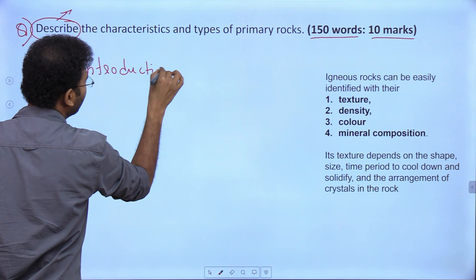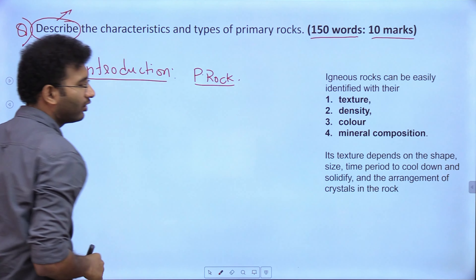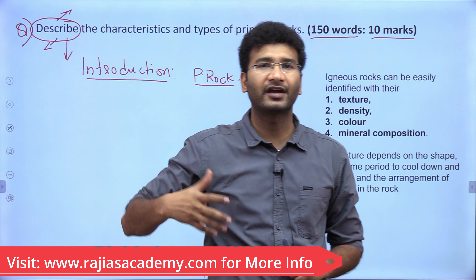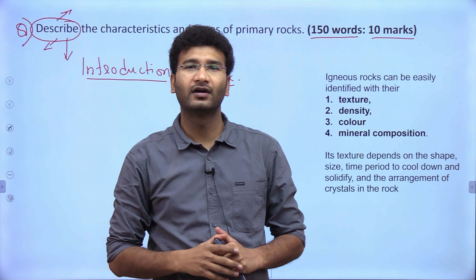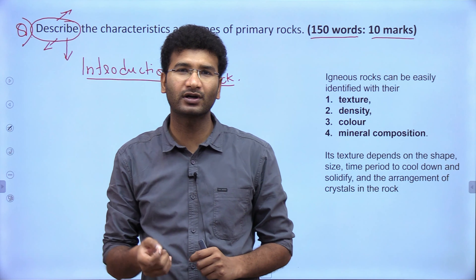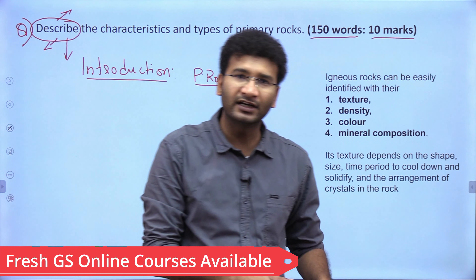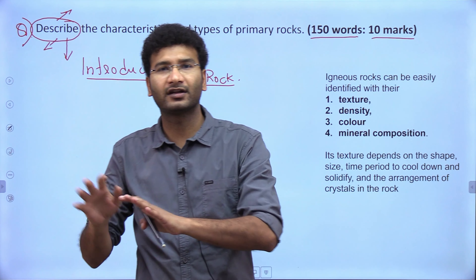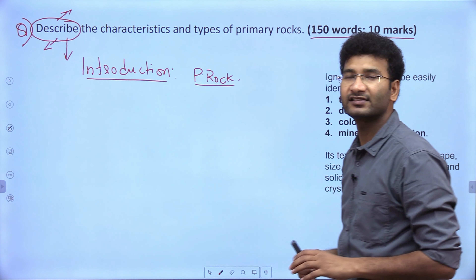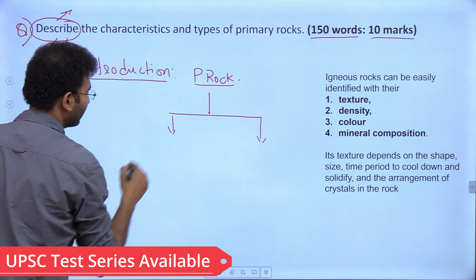A primary rock is one where crystals have been formed for the first time — a new rock formed for the first time. These rocks are none other than igneous rocks, which directly come out from lava and cool down. This cooling can happen within the earth (intrusive rocks) or above the surface of the earth (extrusive rocks).